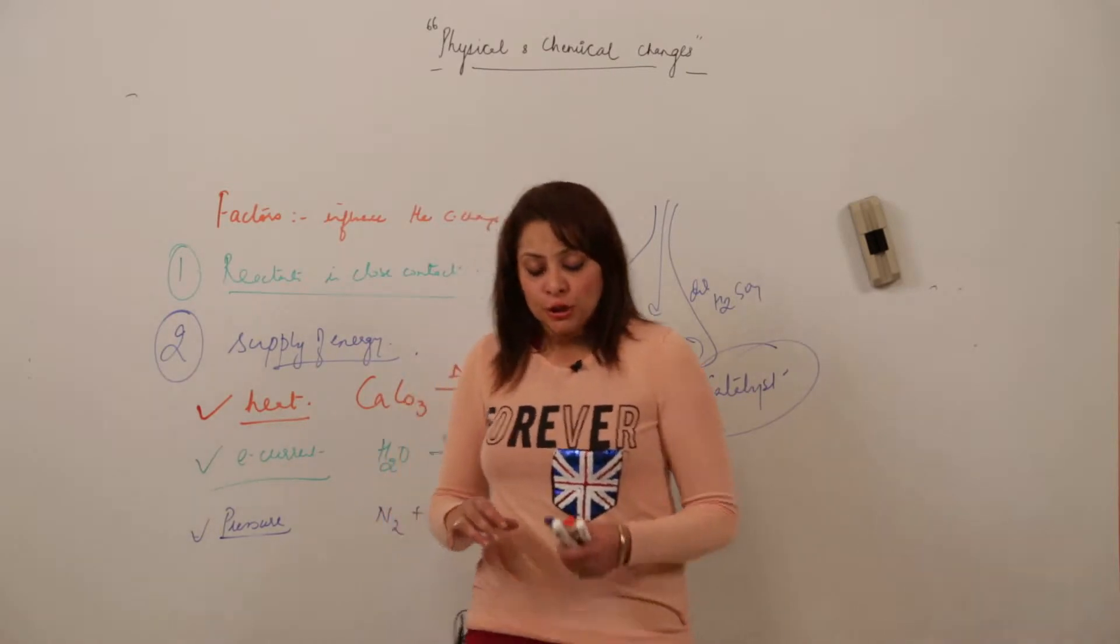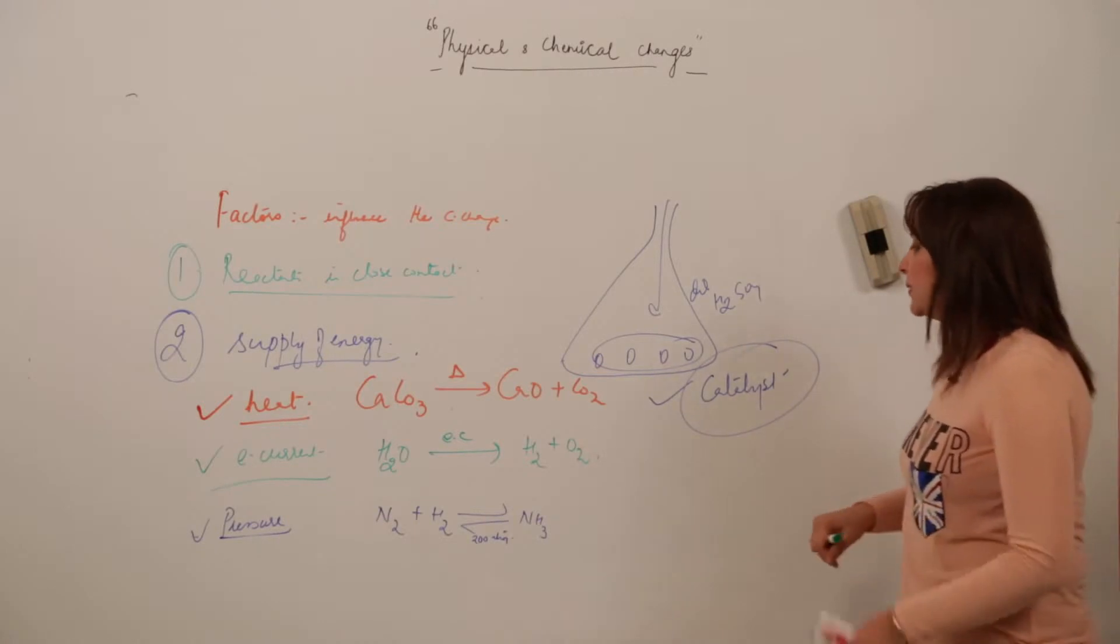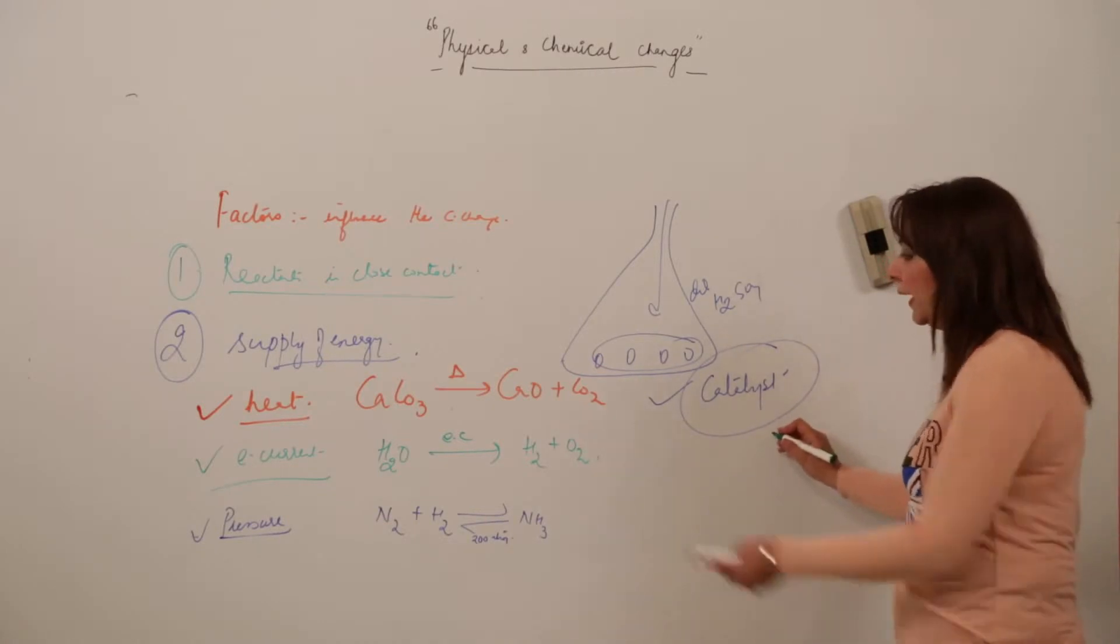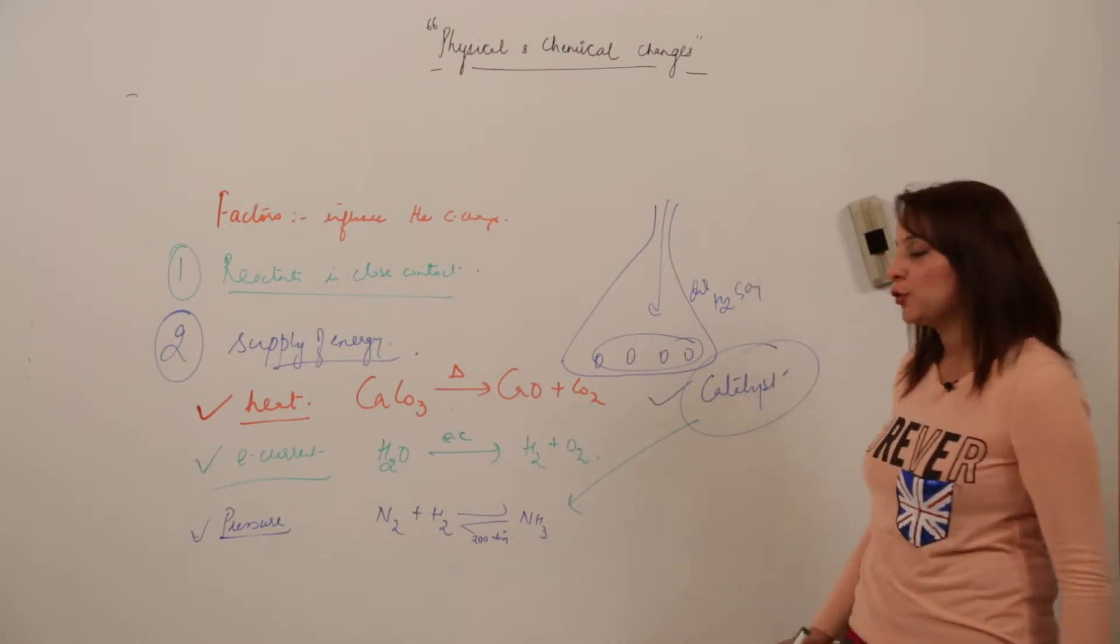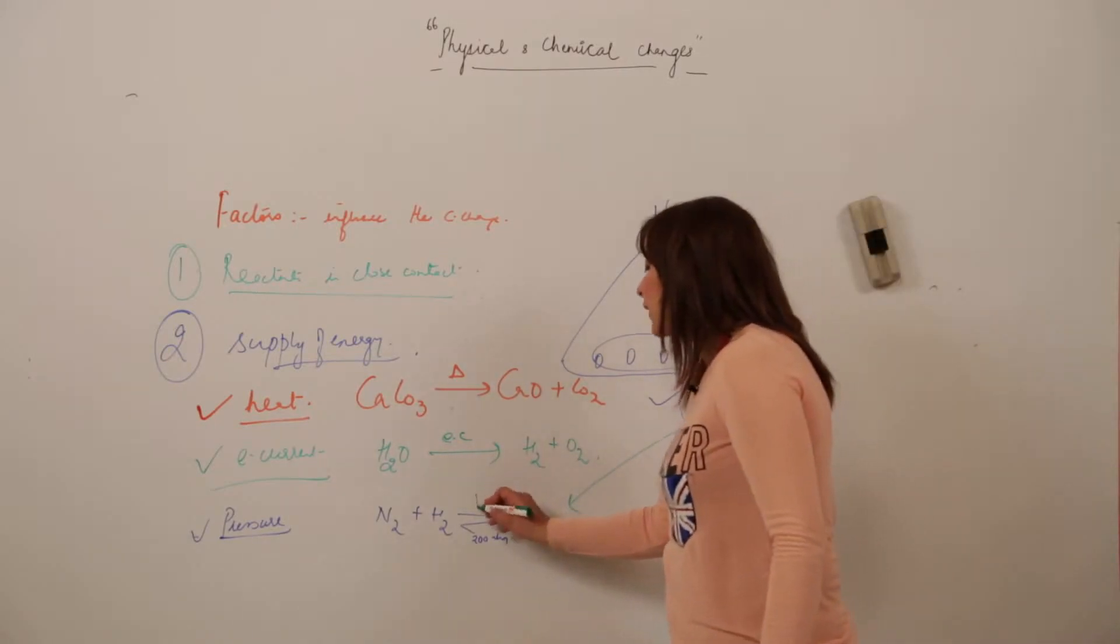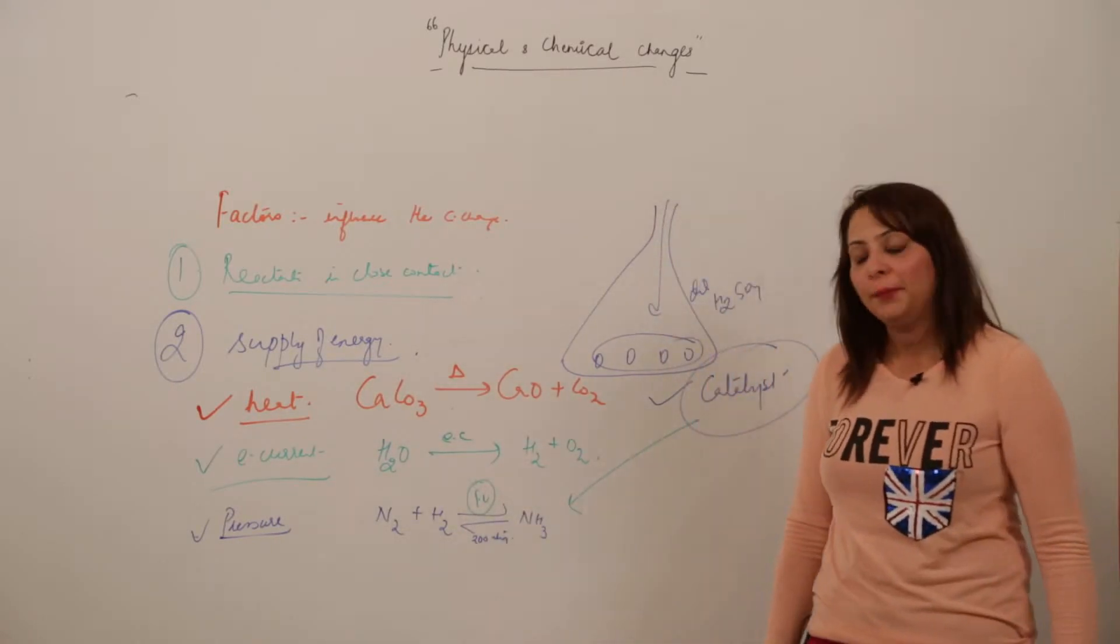I have an example for you in which the catalyst is increasing the rate of reaction. I'm taking the example of ammonia. In the case of Haber's process, that is the formation of ammonia, the catalyst which is acting is iron. So iron is making the reaction happen.